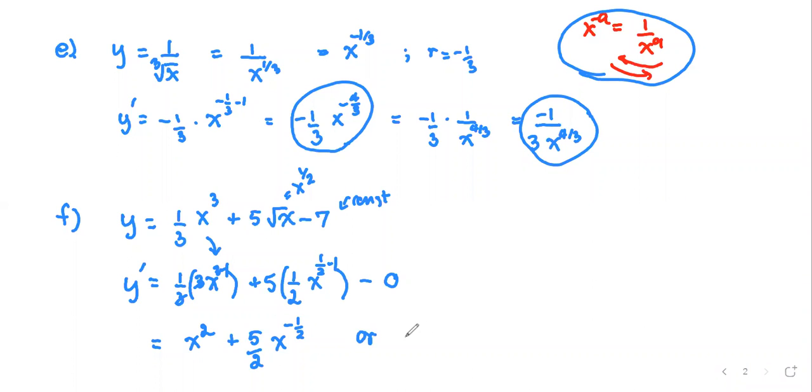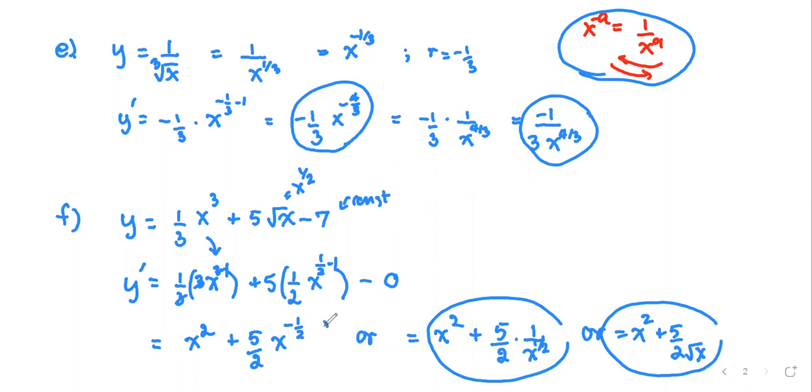You can write the answer in positive power terms as x to the second plus five over two times one over x to the one half, and x to the one half is the same as square root. So equals x to the second plus five over two times square root x. You have three versions of the answer.